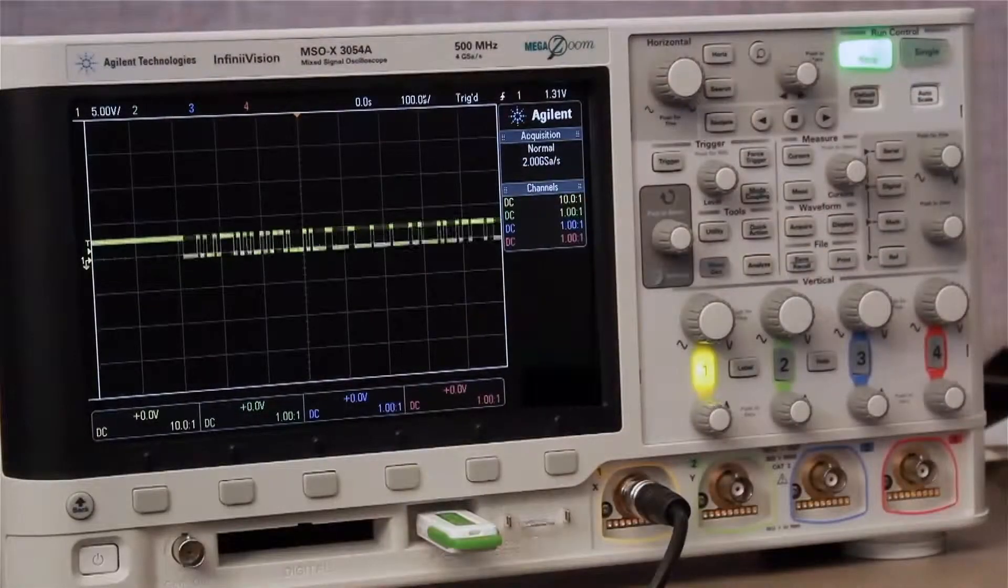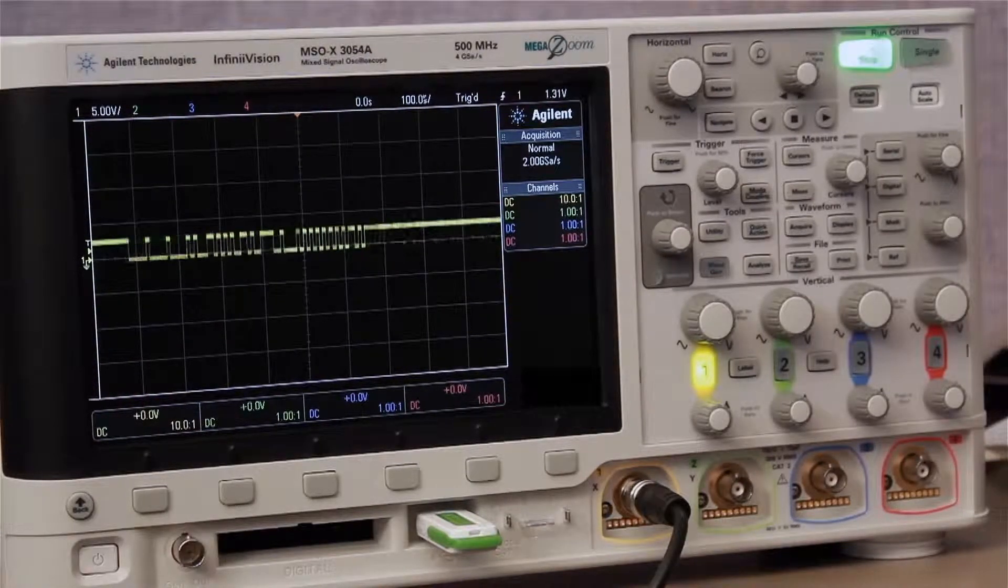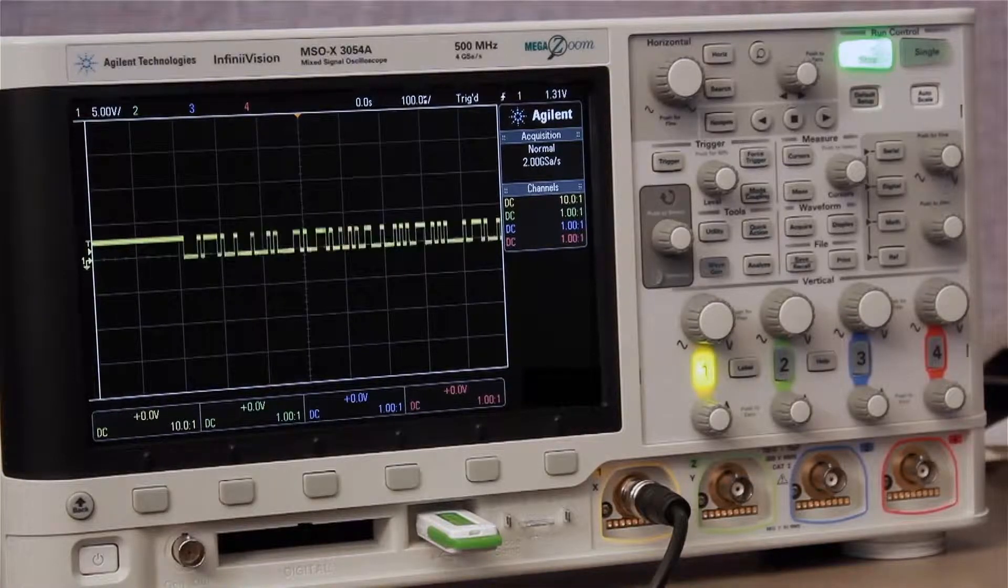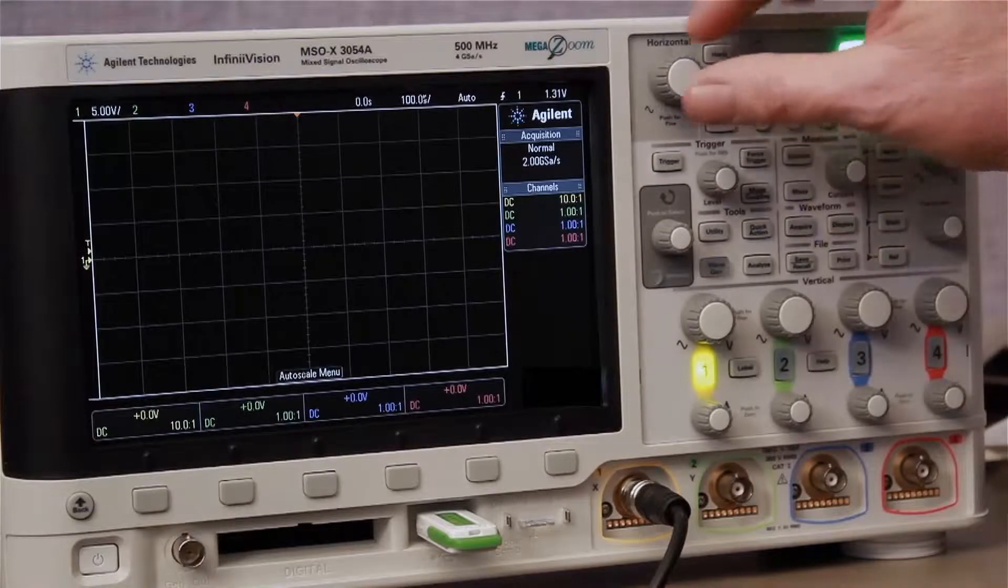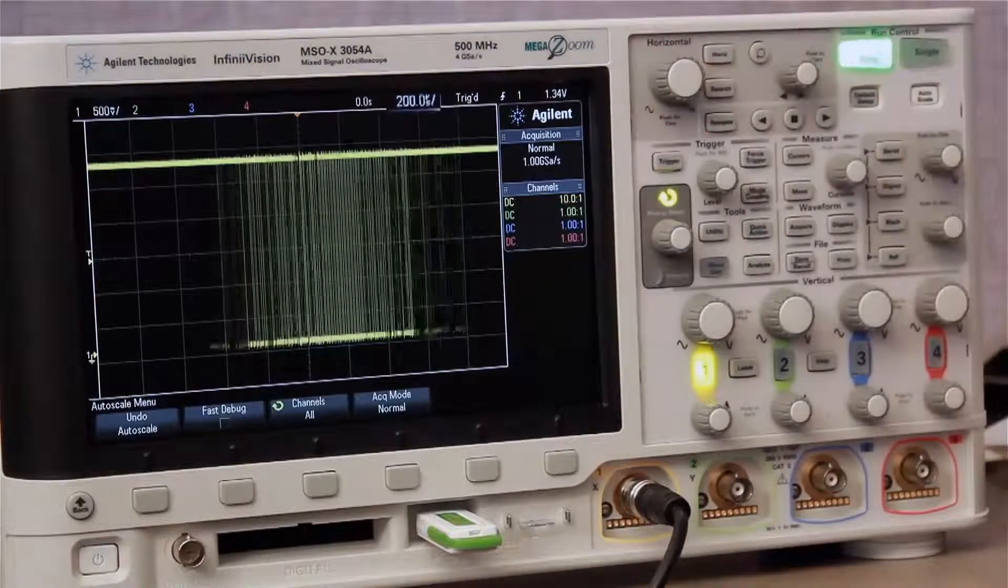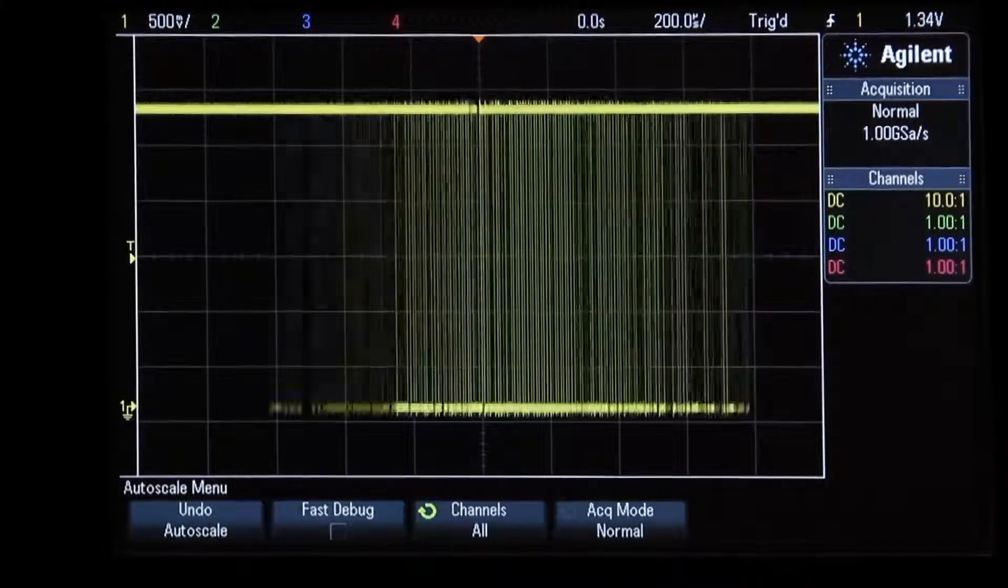Here we show a 125 kilobit per second CAN signal using the scope's default setup condition. Let's begin by pressing Autoscale and then rescale the time base to 200 microseconds per division. The scope is currently triggering on random rising edges of this signal.